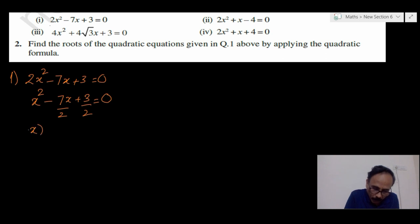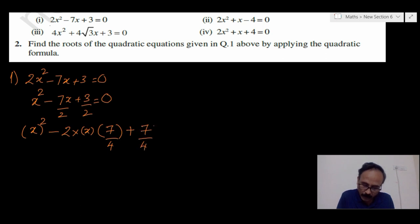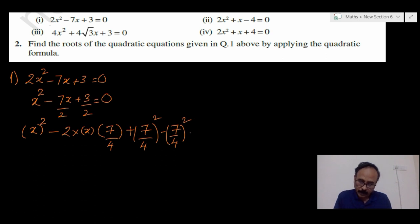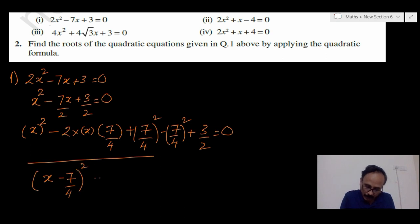Now, writing this as (x)² minus 2 times x times 7/4, so that when we multiply this term we get back 7/2 x. In place of b, 7/4 is there, therefore we have to supply (7/4)² and at the same time subtract it, plus 3/2 is equal to 0. The first three terms can be written as (x minus 7/4)² minus 49/16 plus 3/2 is equal to 0.